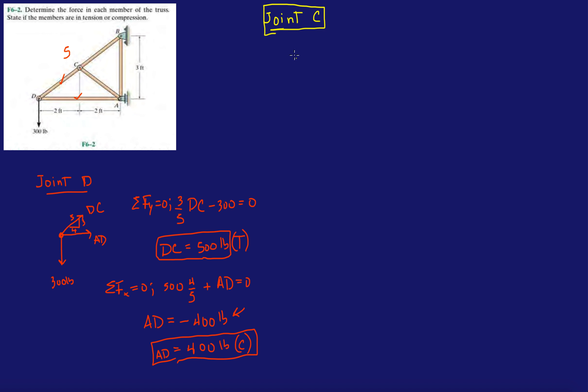Alright, so joint C is going to be like this, so we have C right here, we have CD, alright, we already found CD, DC, alright, in tension.